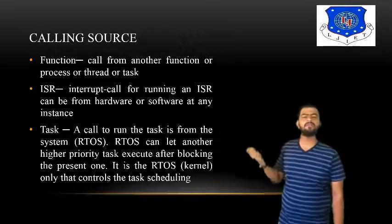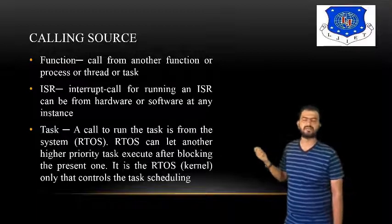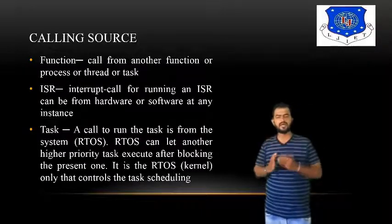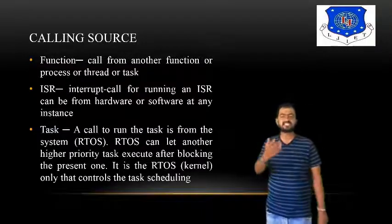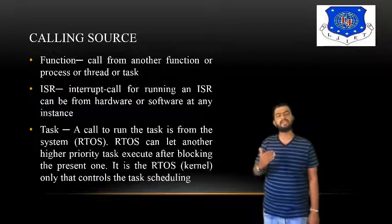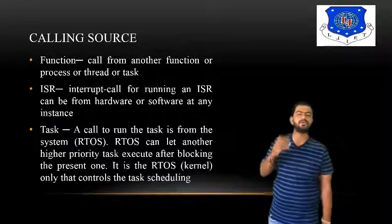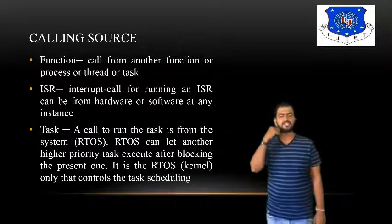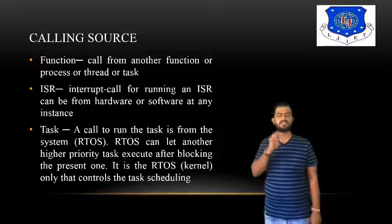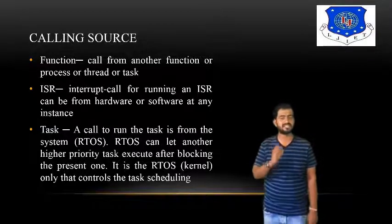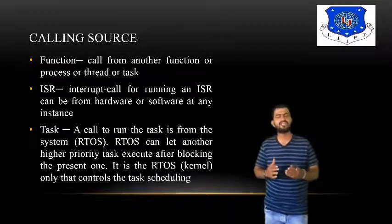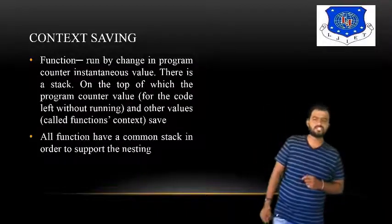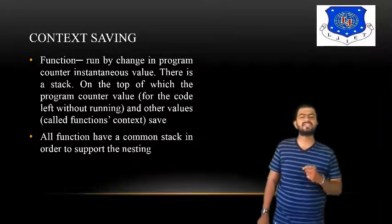A call to run a task comes from the system — the RTOS can let another higher-priority task execute after blocking the present one. The main objective of an RTOS, the real-time operating system, is to execute a specific task within a given amount of time. Based on priority, it holds the previous task and executes the higher-priority one.